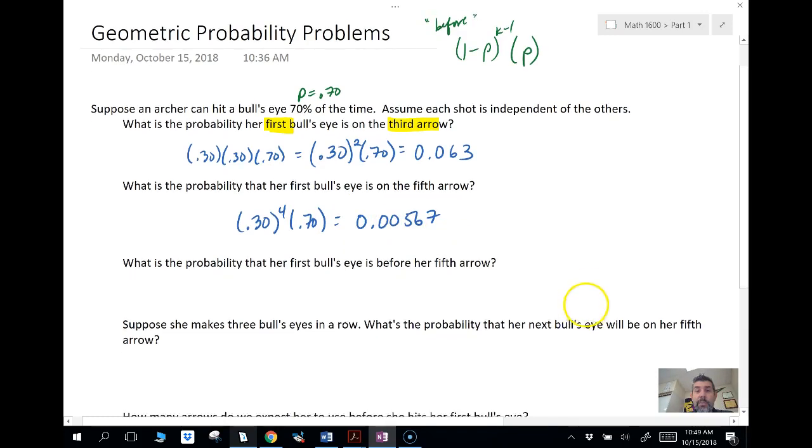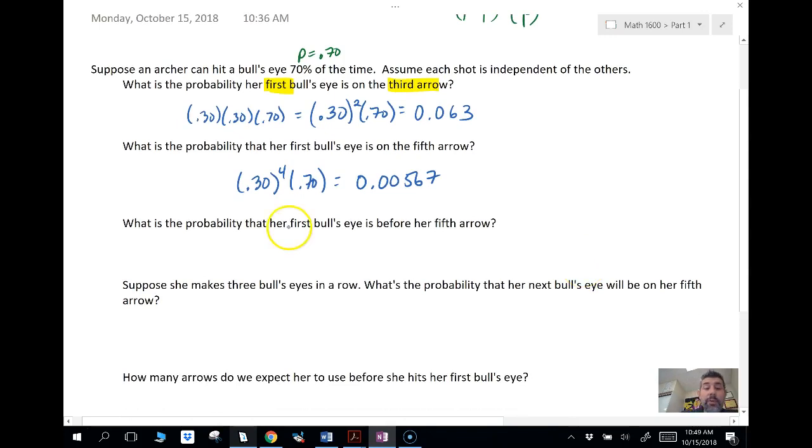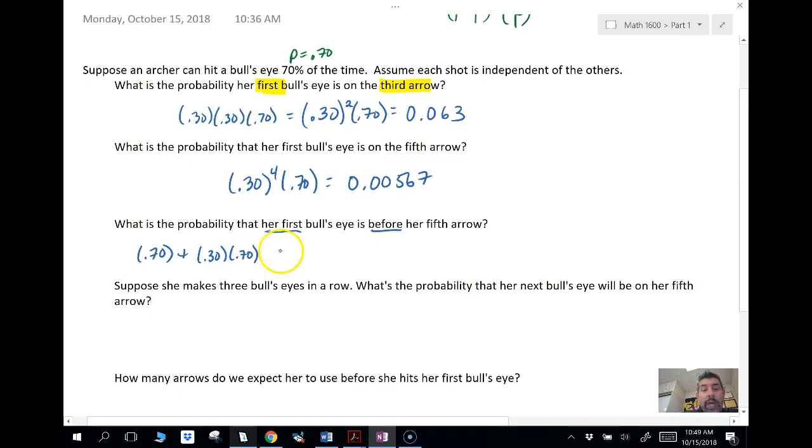All right, so let's take a look at something just a little bit different. What's the probability that her first bullseye is before her fifth arrow? So before her fifth arrow means she can hit it on the first arrow, or she can hit it on the second arrow. That means she's going to miss and then make. Or, anytime we have an or, we add.